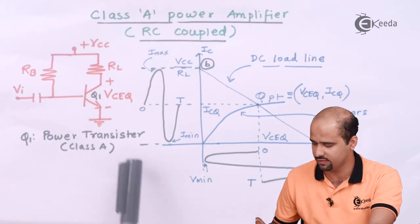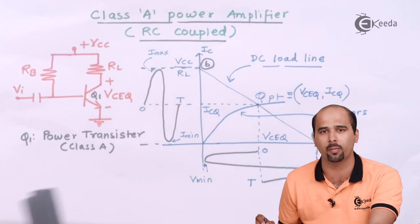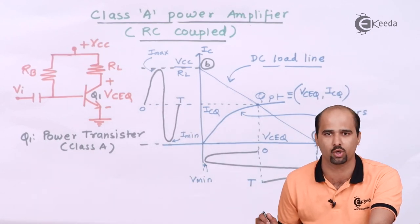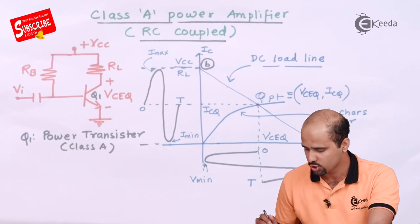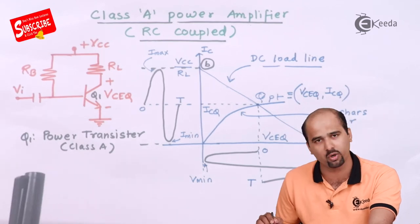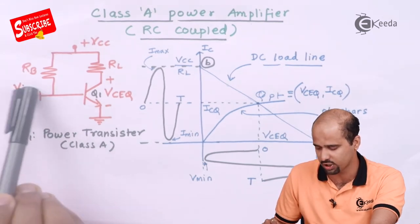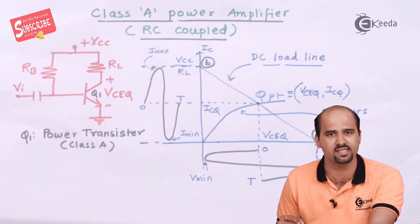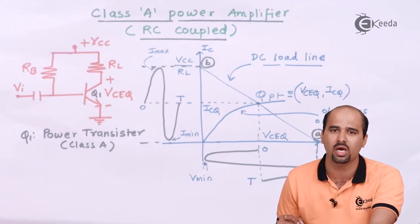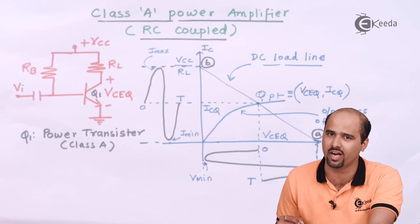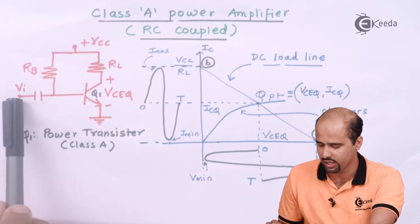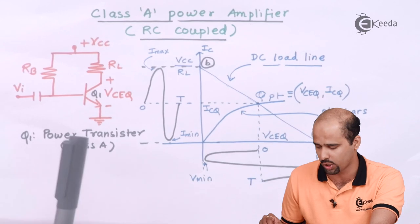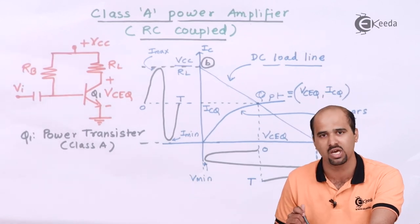Let's analyze this with the waveform and DC load line. As we have studied the Q point and DC load line through DC analysis only — whenever I talk about DC analysis, I take the coupling capacitor as open. Because in DC, frequency is equal to 0 and XC is equal to infinite, which means open circuit. So the input VI has nothing to do with this circuit in DC analysis, and I have to do the DC analysis first.